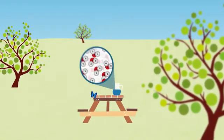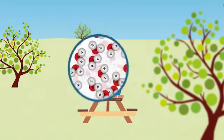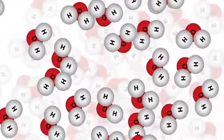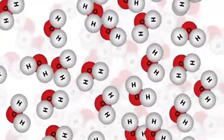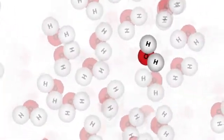For example, water is made up of atoms. This model shows atoms joined together in groups called molecules. Water molecules are made of hydrogen and oxygen atoms.